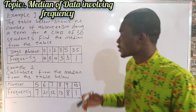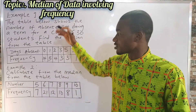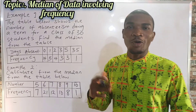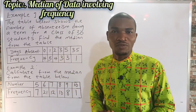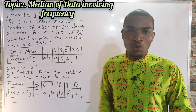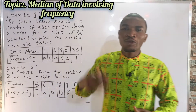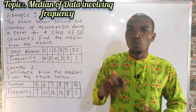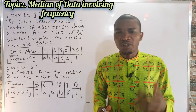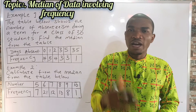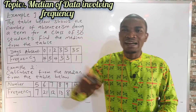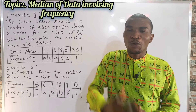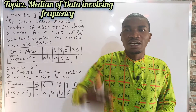Alright, on the board I have some examples I will solve — example 1 and 2 — on how to find the median of a given set of data when it involves frequency. To calculate the median, the first thing you need to find is what we call the median class — you can also call it the median column.